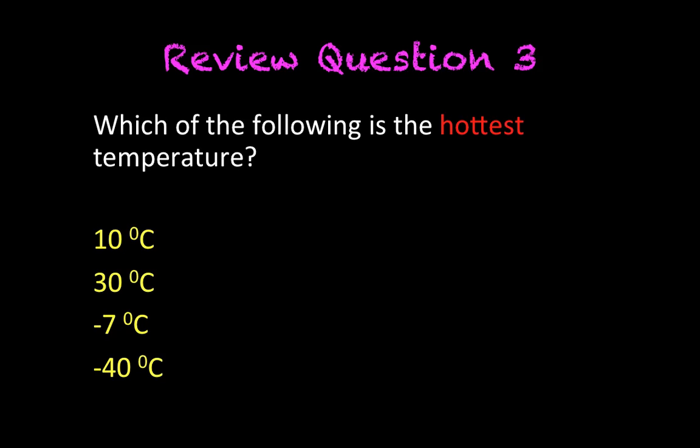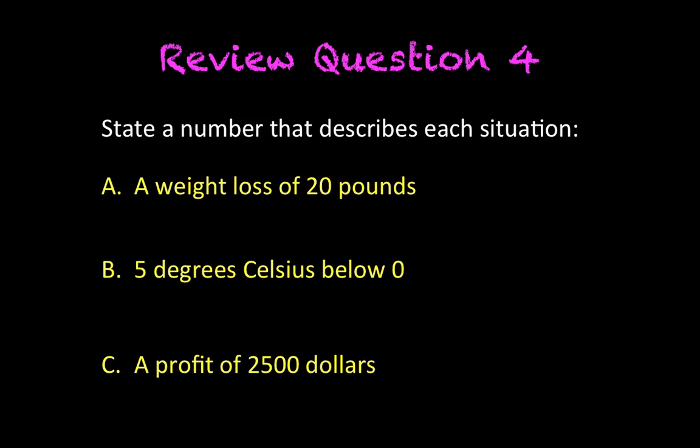All right, question three now. So you got two out of two correct, let's see if you can get the final one. Which of the following is the hottest temperature? So you have four temperatures there. Figure out which one you think is the hottest temperature. Now, if you said 30 degrees Celsius, you are correct, because the more positive the value, the higher the temperature will be. So therefore, positive 30 degrees Celsius is the highest temperature of the group.